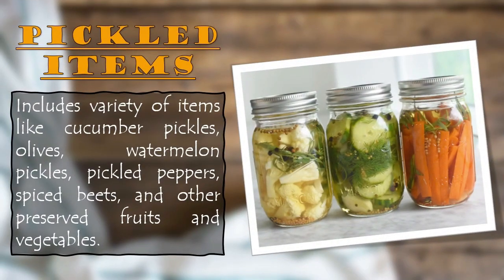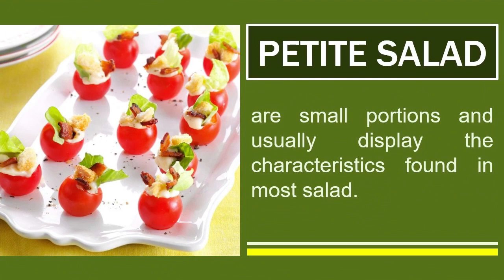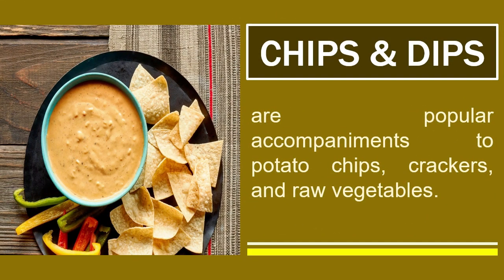Pickled items include a variety of items like cucumber pickles, olives, watermelon pickles, pickled peppers, spiced meats, and other preserved fruits and vegetables — this is where our pickled green papaya is categorized as a relish. Petite salads are small portions that usually display characteristics found in most salads. This appetizer is also considered a salad as well as an appetizer, with similarities in ingredients, use, and function. Chips and dips are a popular accompaniment to potato chips, crackers, and raw vegetables. The dip must not be too thick that it cannot be scooped up without breaking the chip, but thick enough to stick to the dipper.